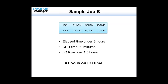Let's look at sample job B. This job ran for just under three hours — two hours, 41 minutes, and 30 seconds. I've got just over 20 minutes of CPU time but an hour and 37 minutes of IO time. So conversely, unlike the first job, there's not going to be a lot of value in tuning the CPU. I ran for two and a half hours, over an hour and a half of that was on IO, so I really want to focus on that IO time — find out where it's being spent and what can be done about it.